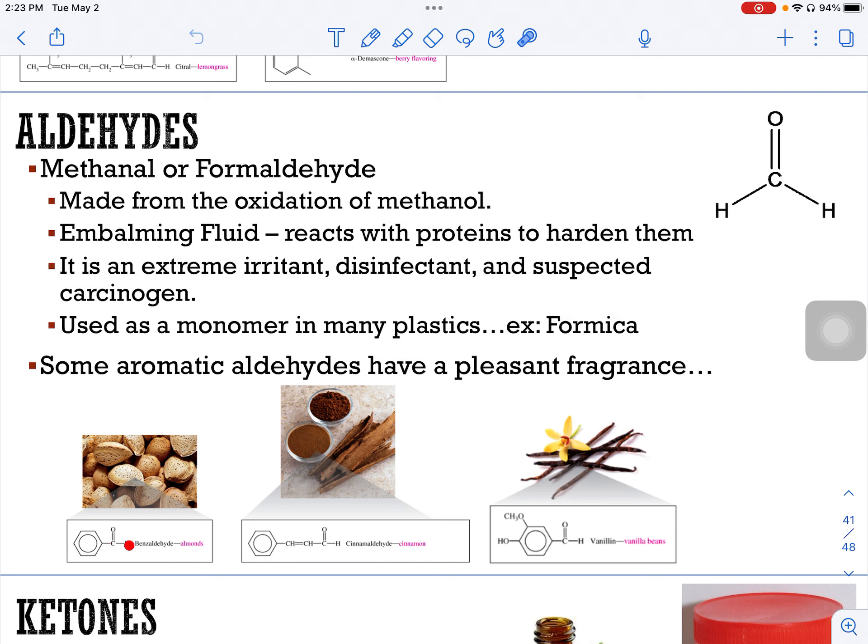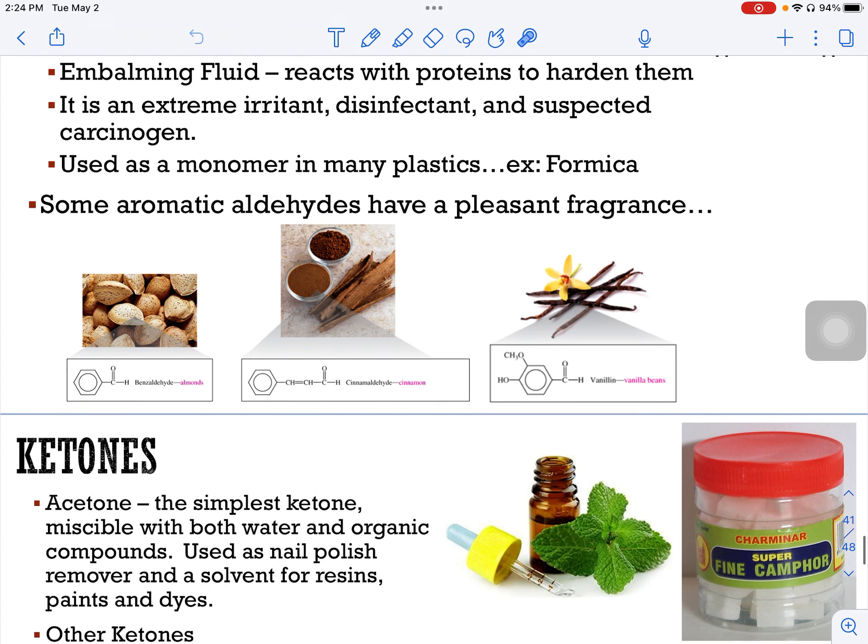Here's some examples of aldehydes. Here's benzaldehyde. There's the C double bonded to the O with an H, and then here's the R group. Cinnamon aldehyde. Here's the R group, and the C, and the O, and the H, and vanillin the C, the H, and then this entire thing is the R group. Some aromatic aldehydes have pleasant fragrances, like those three.